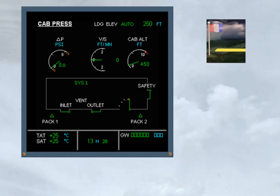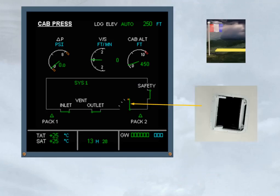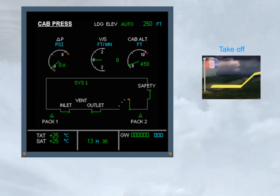When the aircraft is on the ground before the flight, the outflow valve is fully open. There is no differential pressure, and there is no vertical speed. The cabin altitude is indicating the field elevation of the departure airfield. During the takeoff roll, the system controller signals the outflow valve to close slightly in order to pre-pressurize the aircraft. This is to avoid a pressure surge at rotation.